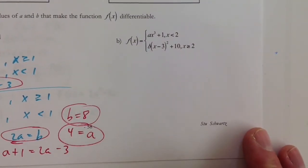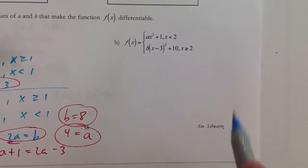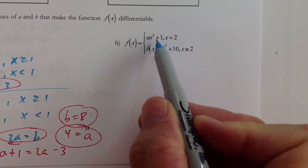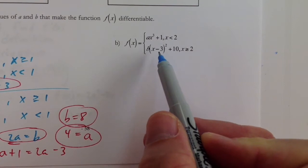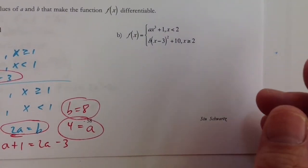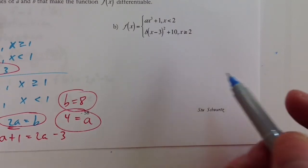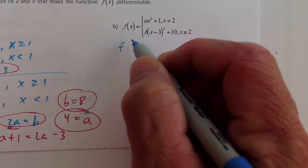All right, last one. So we've got to try to figure out what the values are for a and b that would make this function continuous and differentiable. And I would like you to try this one on your own first after seeing the last problem. But let's go ahead.